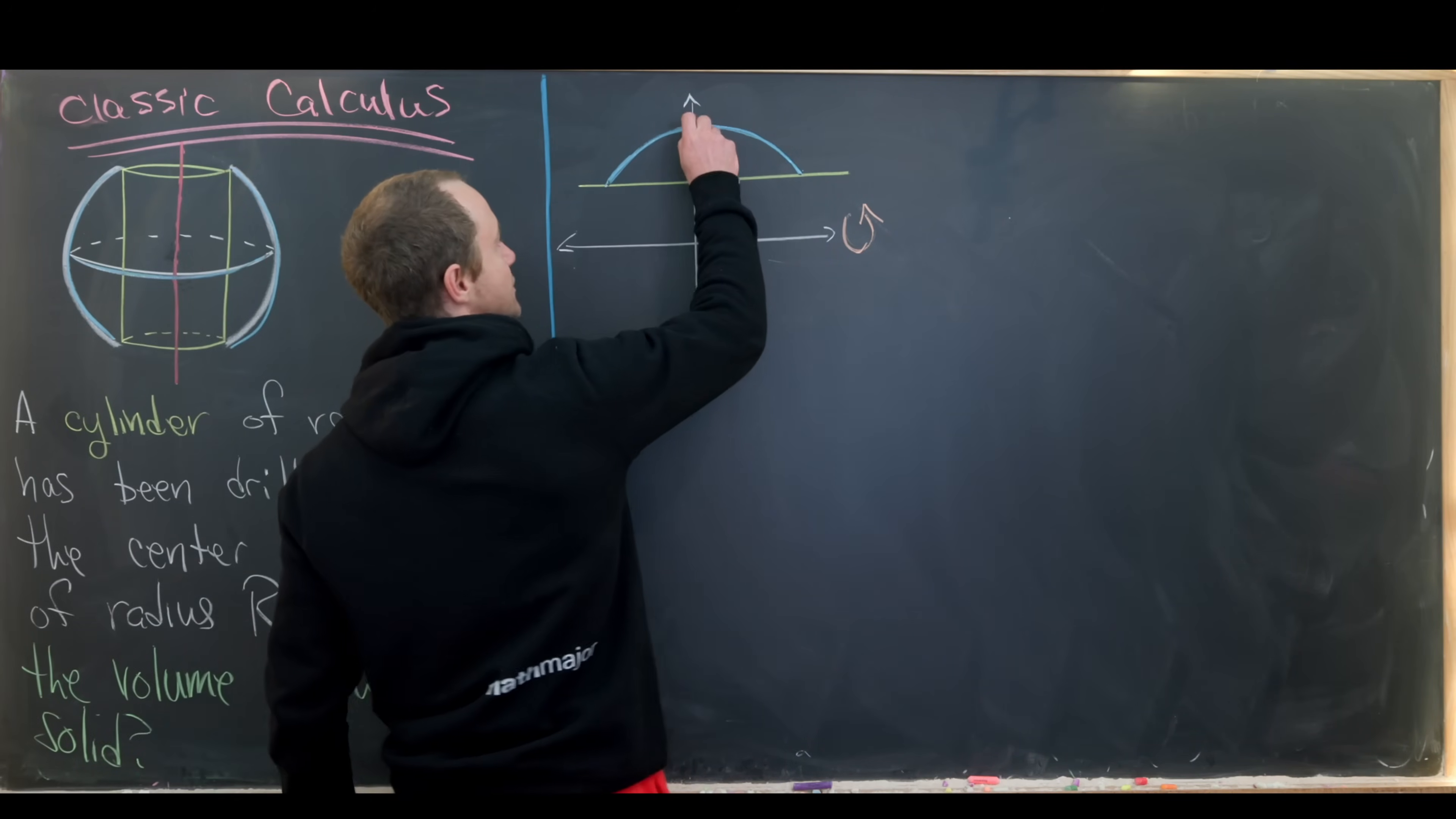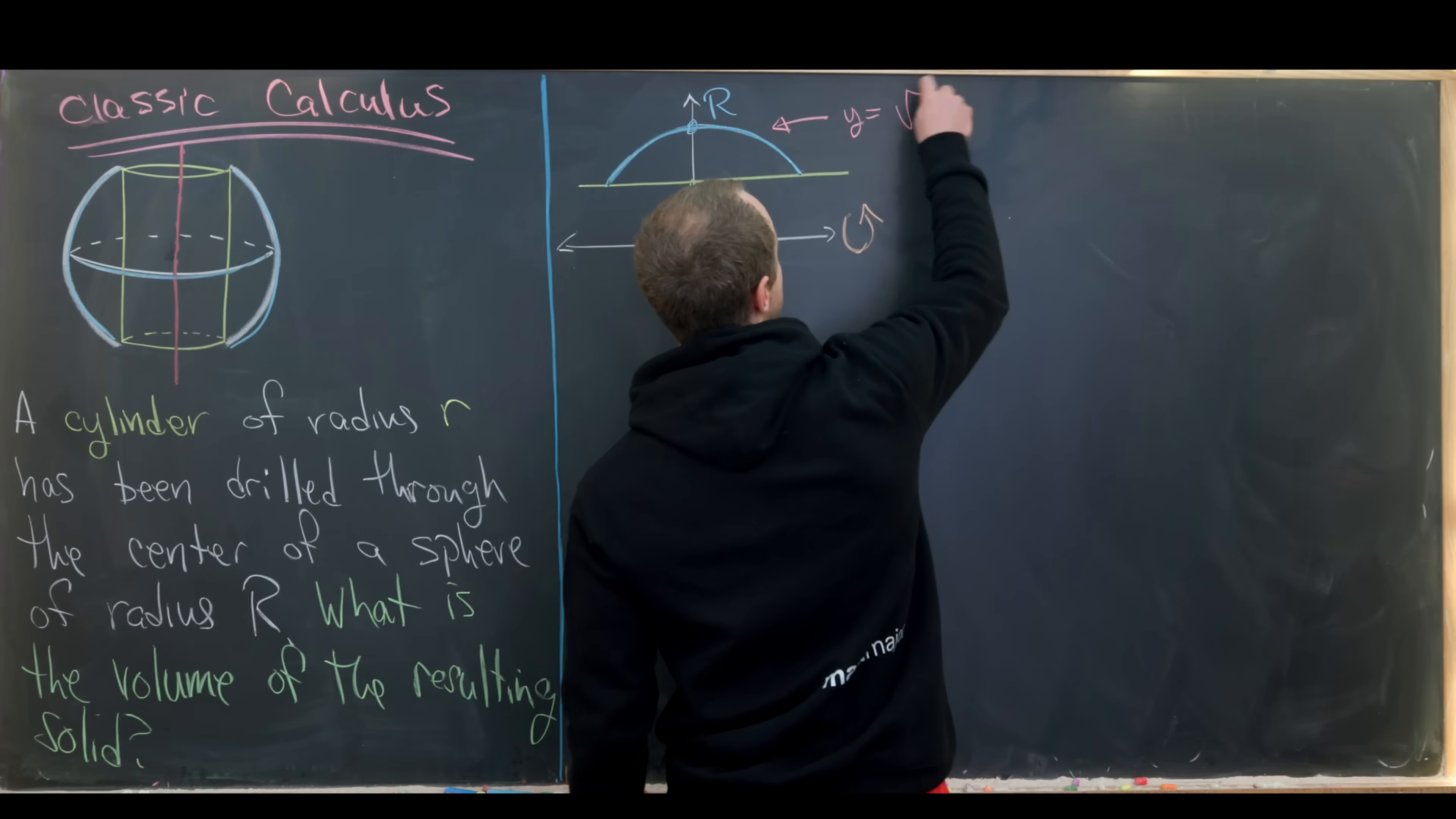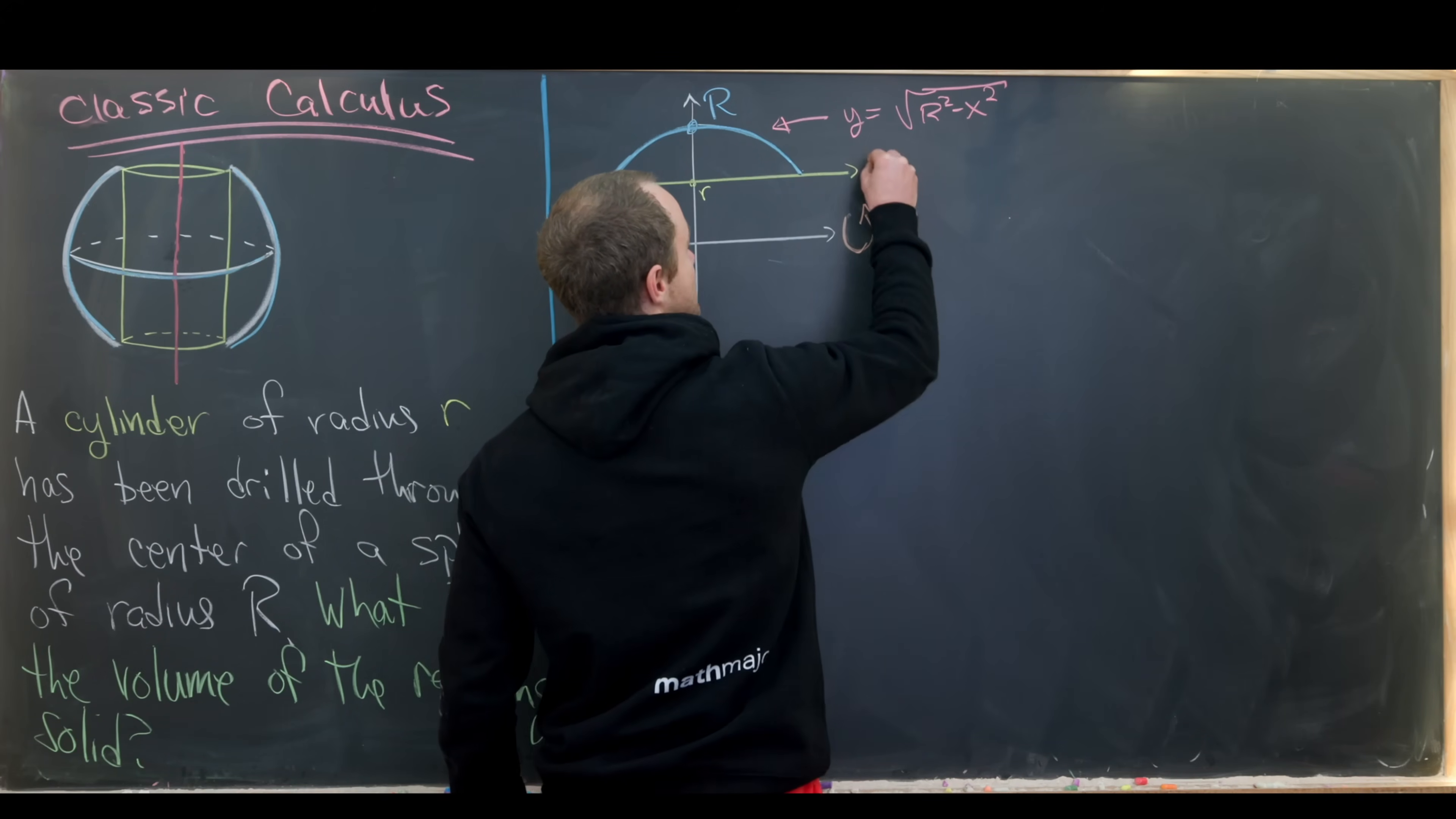I guess another thing to point out is we know that this point right here is capital R given that this is a sphere of radius R, capital R. We can also write down the equation of this circle. So since we've put it in the upper half plane, we know that we can use the equation which looks like y equals the square root of capital R squared minus x squared. So the standard equation would be x squared plus y squared equals R squared. But since we're wanting it as a function of y in terms of x, it would be that.